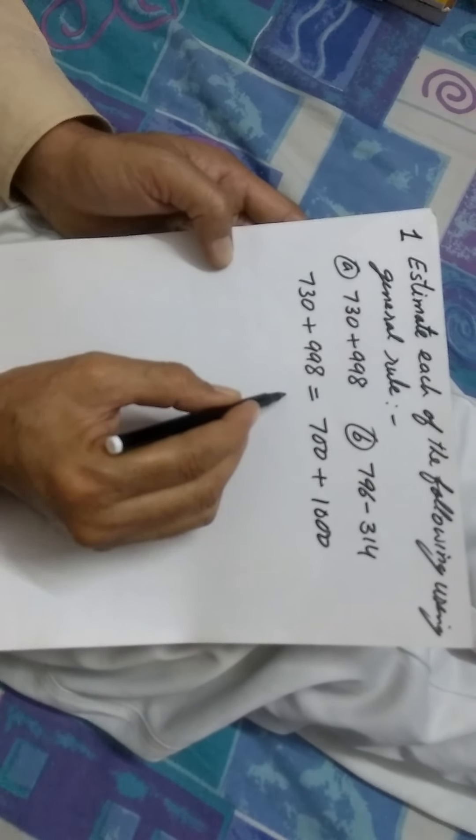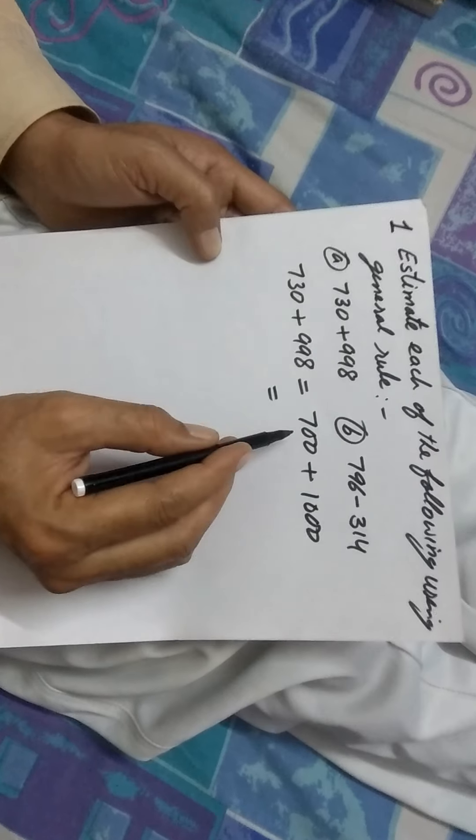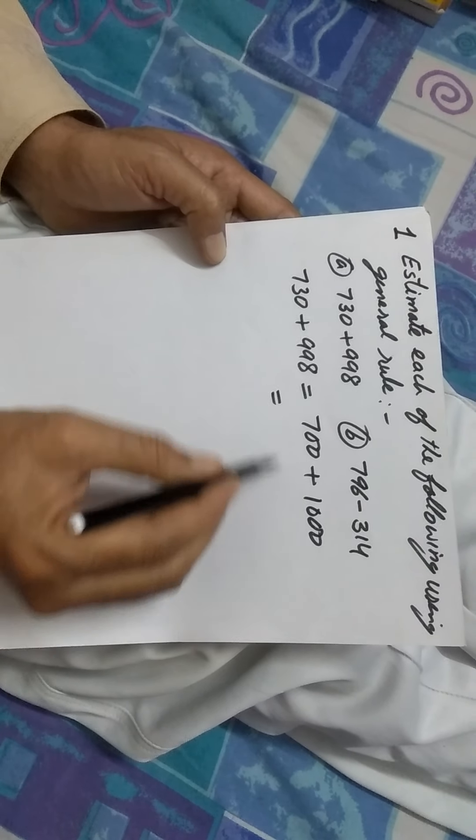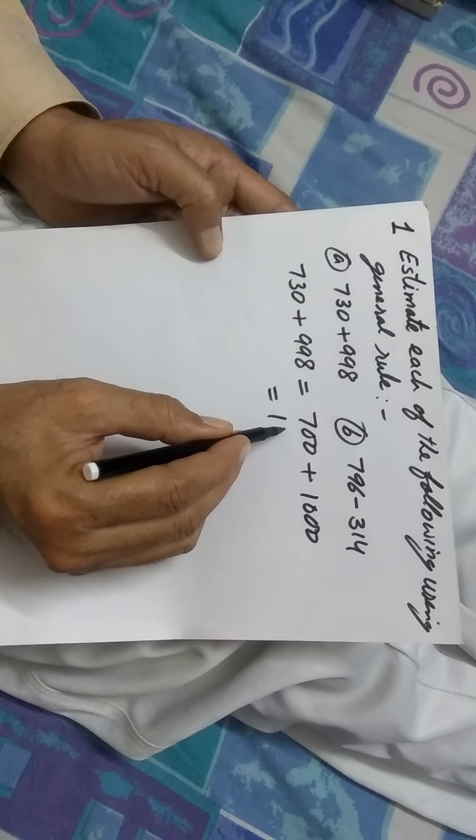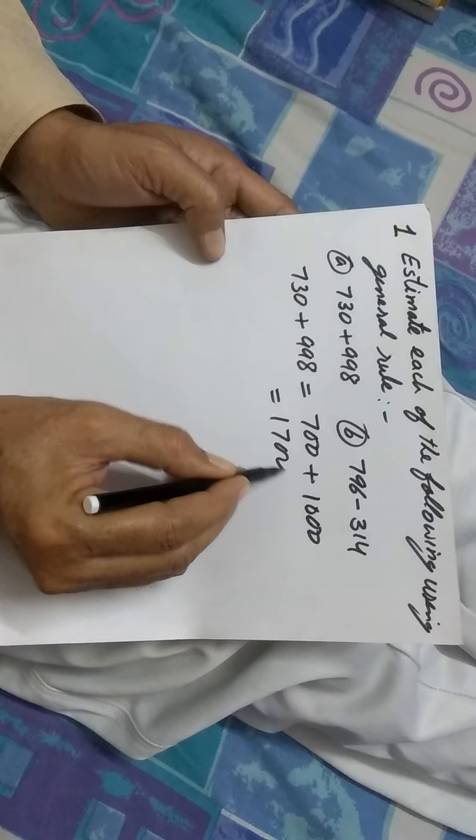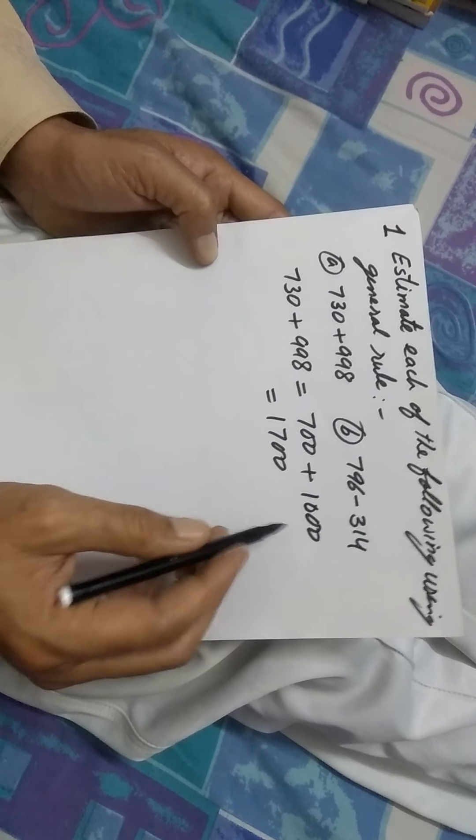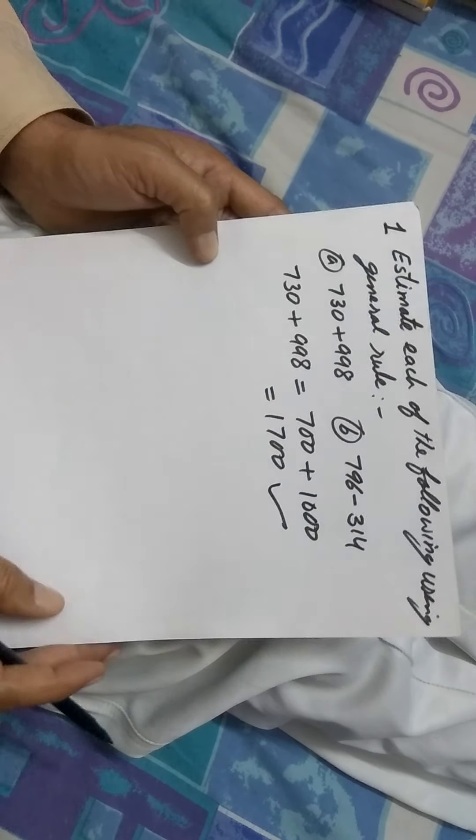And now, both the numbers can be added. 700 plus 1000 will give you 1700. This is what you were expected to do.